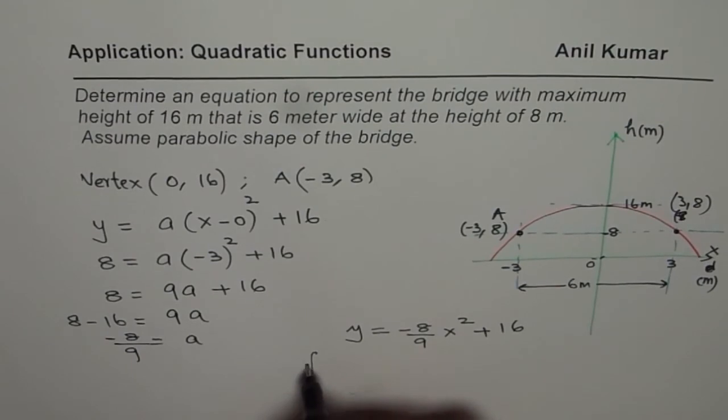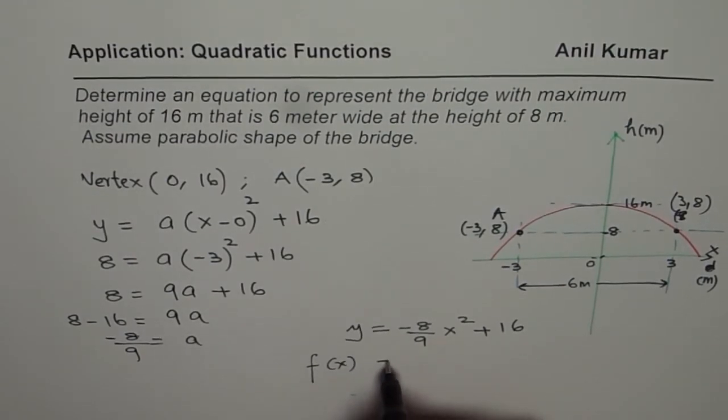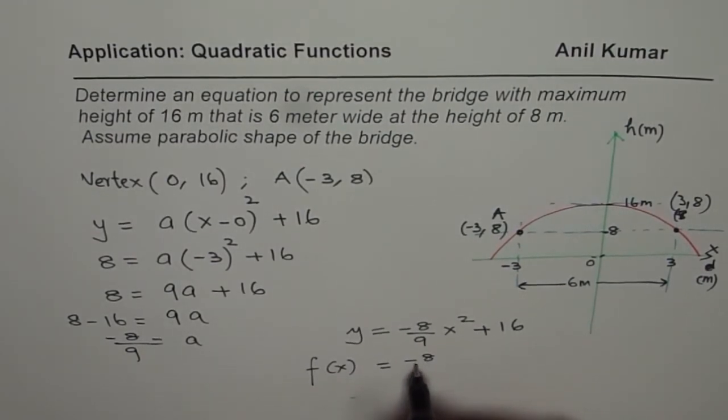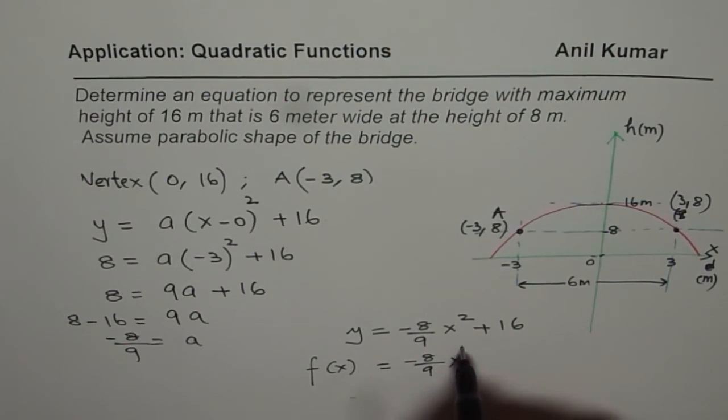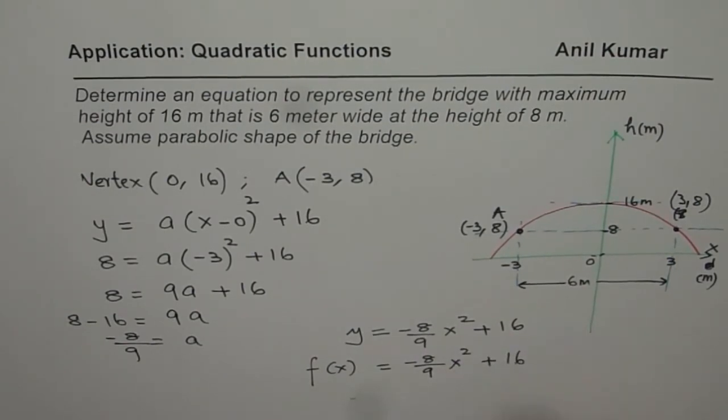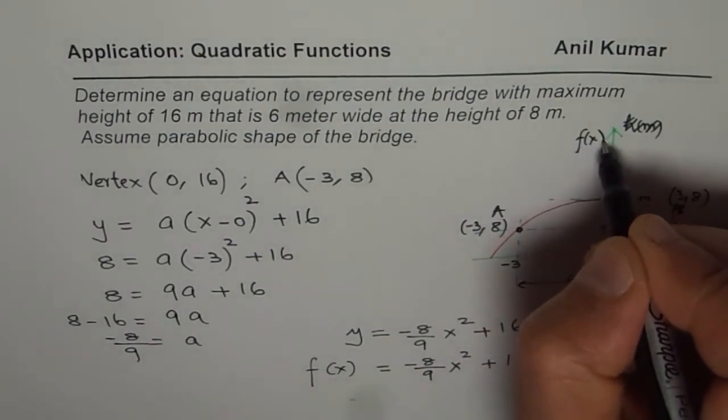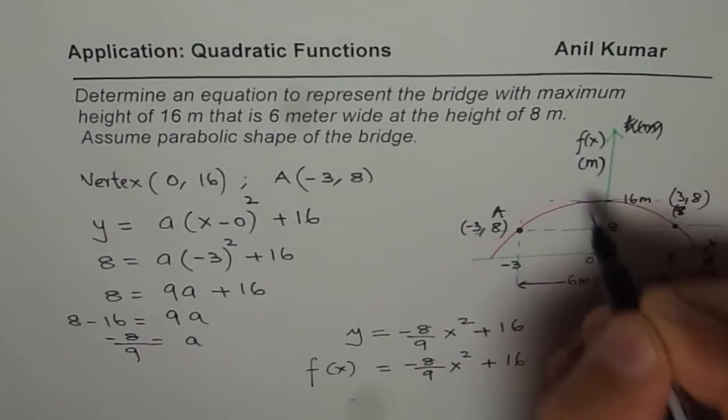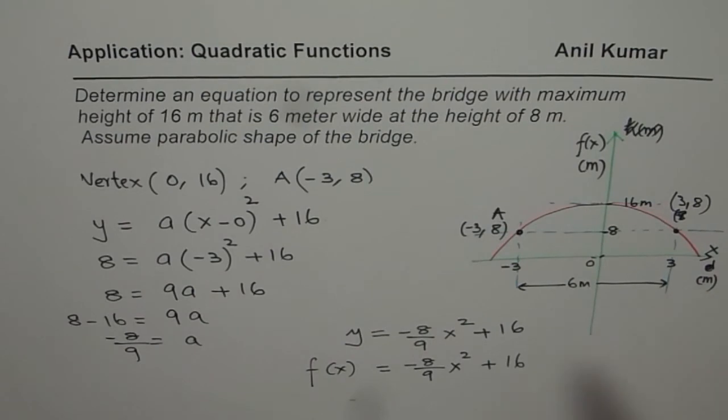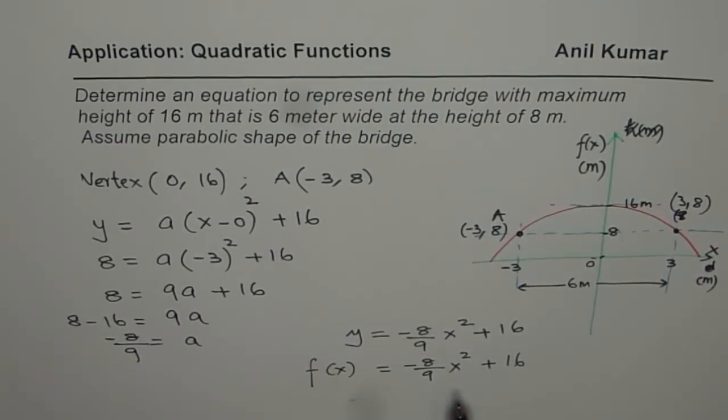In function notation, we could write this as f of x equals to minus 8 over 9 x square plus 16. So I am writing height in function notation, I can write f of x here and the units are in meters. So these are a few corrections depending on the kind of variables I selected as we moved on.